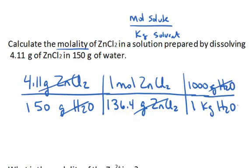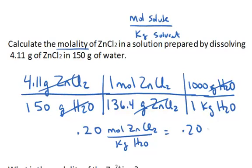And I can multiply 4.11 times 1,000 divided by 150 divided by 136.4 divided by 1. And that equals a mole concentration of 0.20 moles of zinc chloride per kilogram of water, which I would shorthand express as 0.2 lowercase m, which stands for molal.